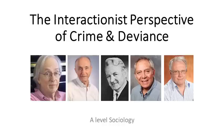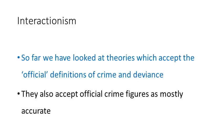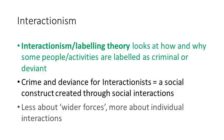Hello, and welcome to this video on the interactionist perspective of crime and deviance. So far, we have looked at theories which accept the official definitions of crime and deviance, and also accept official crime figures as mostly accurate. Unlike functionalism, interactionism, or labelling theory, looks at how and why some people or activities are labelled as criminal or deviant, whilst others are not. Crime and deviance for interactionists equals a social construction created through social interactions — we create the concepts of crime and deviance. It is less about wider forces and more about individual interactions; it is a micro-approach rather than a macro-approach as we saw with functionalism.